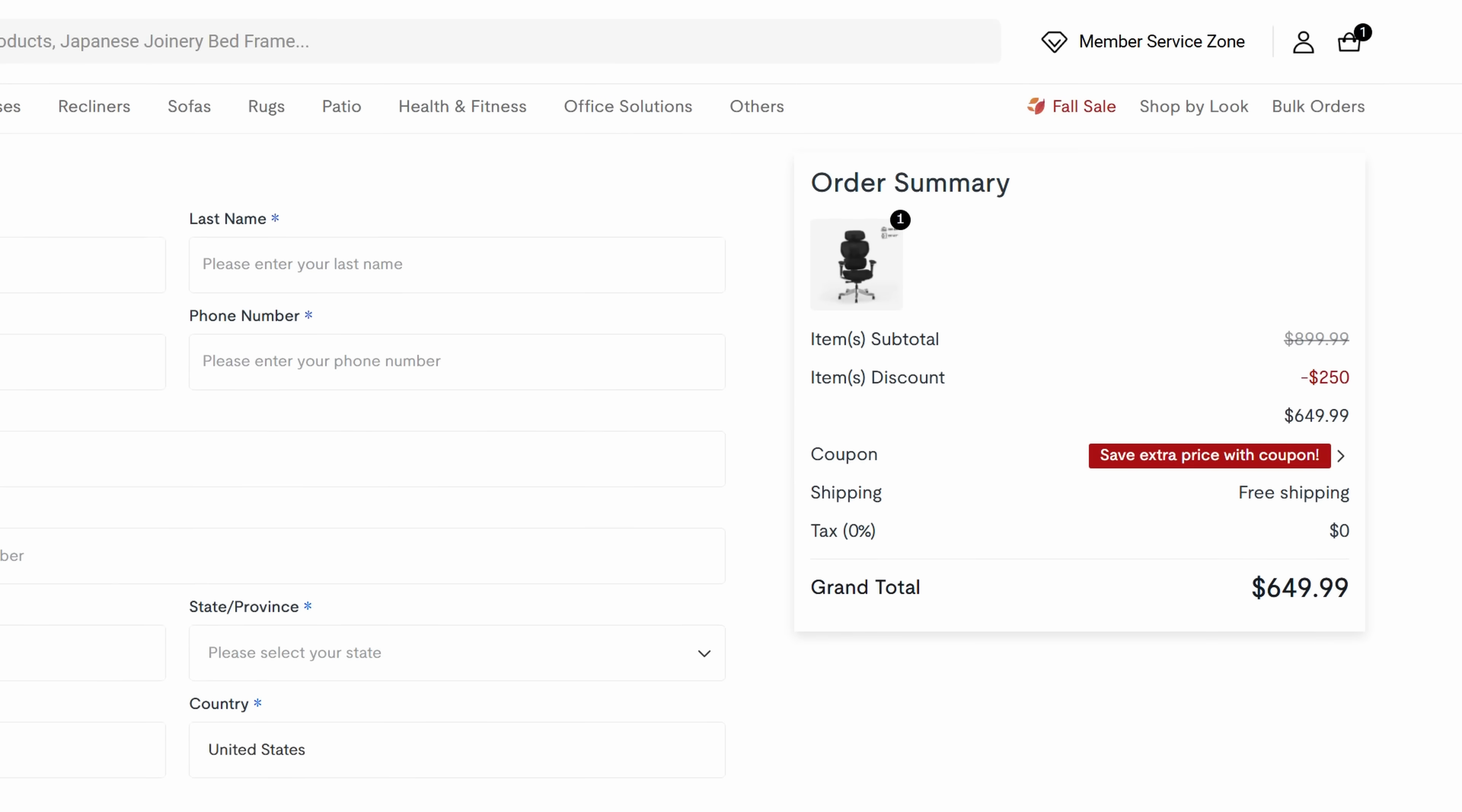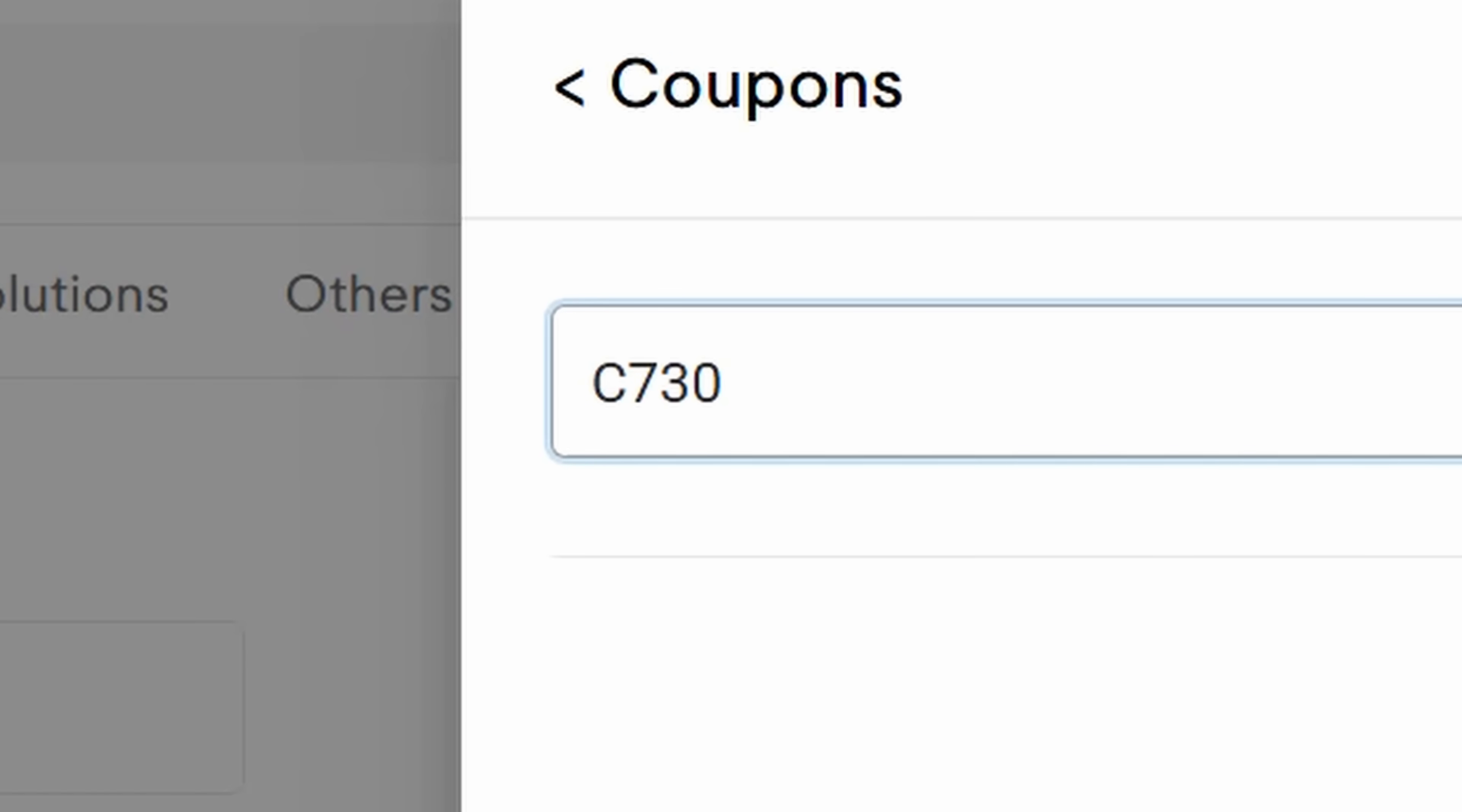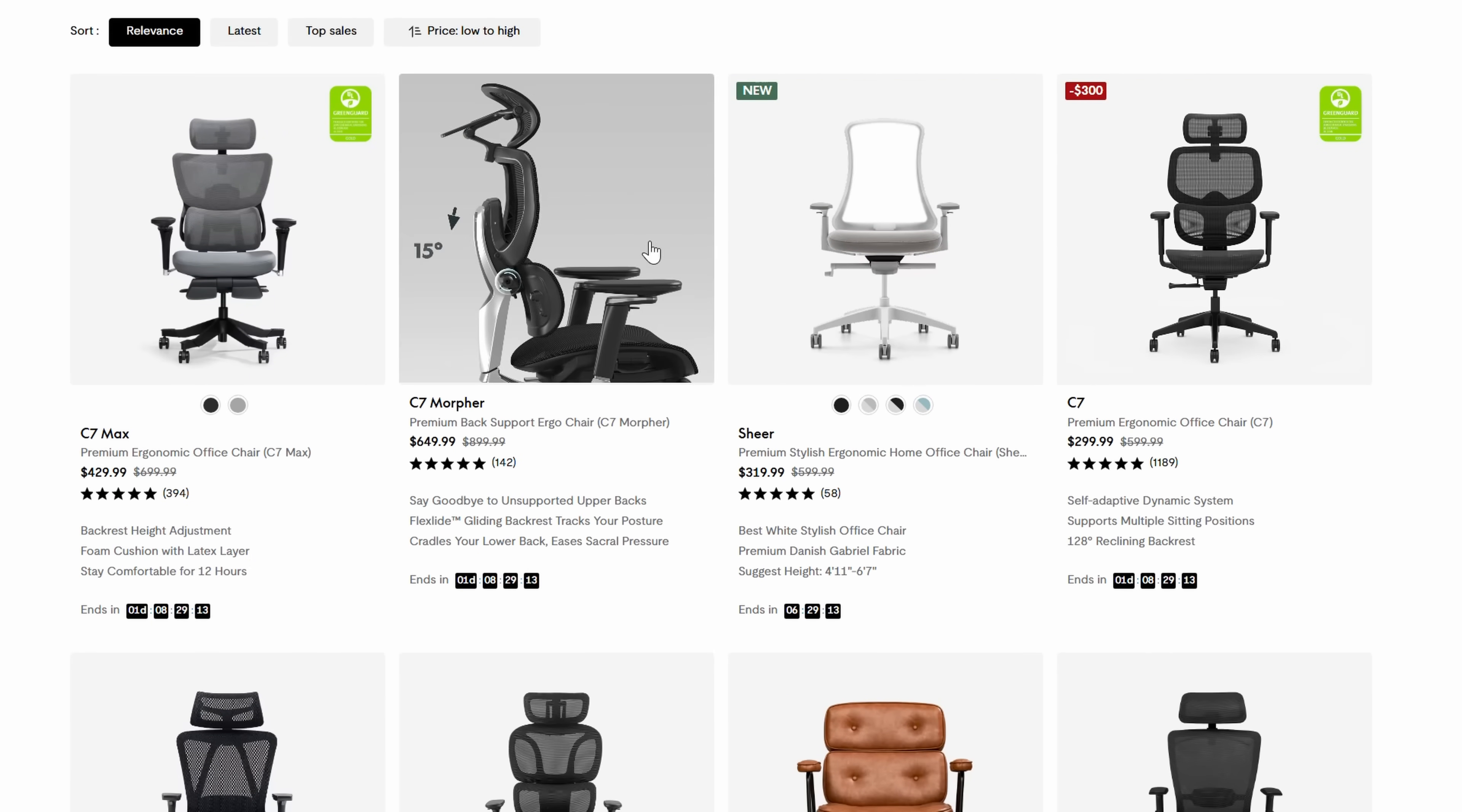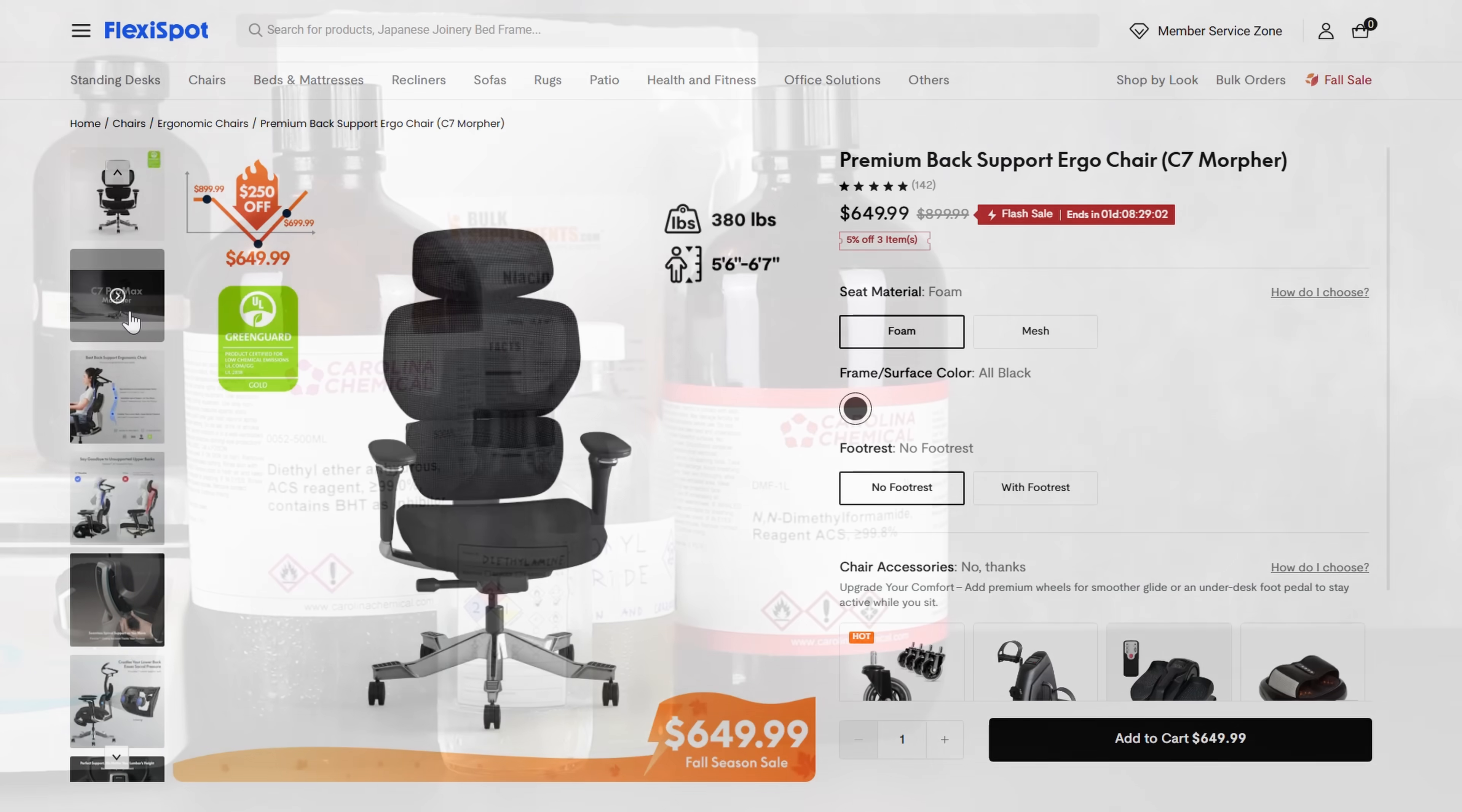Use code C730 to get $30 off your C7 Max, or one of the other FlexiSpot chairs, like the more budget-friendly but still high-quality C5, or the more recently released C7 Morpher, which features an upgraded lumbar support and upper backrest. You can find all of the links in the cards and video description. And now, back to the fun.